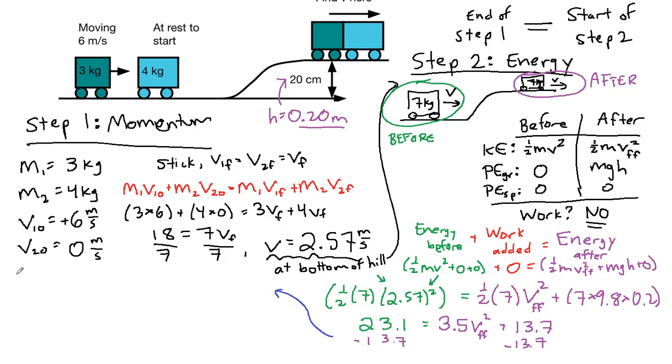Alright, I'm going to move over here for space. So on the left now, we have 9.4, and that's equal to 3.5 v final final squared. So we can divide both sides by 3.5. And we can take the square root of both sides so that instead of v final squared, we have just v.